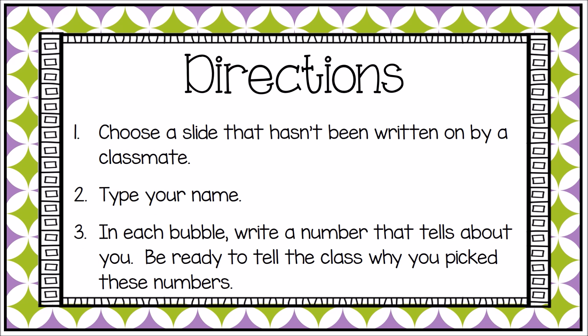Here are the directions for our activity. Number one, choose a slide that hasn't yet been written on by a classmate. Pick something that's a character or a child that you relate to. Then type your name on that slide. Lastly, in each speech bubble, write a number that tells about you. Make sure you remember what these numbers represent so you can be ready to tell the class why you picked these numbers.